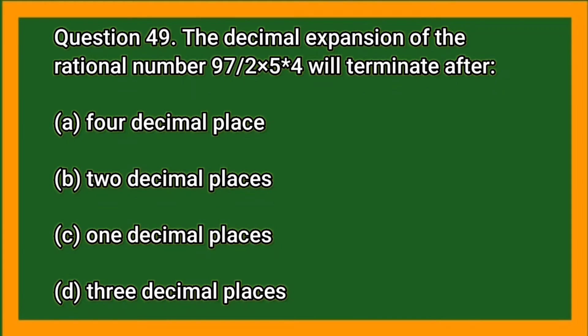The decimal expansion of the rational number 97 divided by (2 × 5^4) will terminate after how many decimal places?